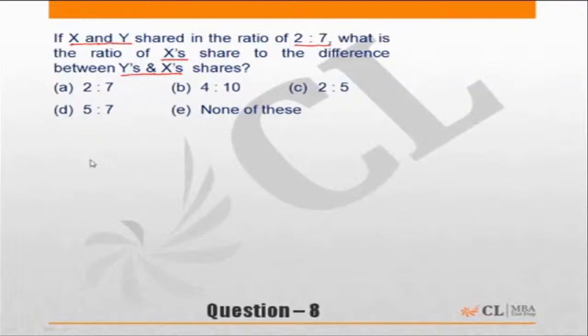Okay, the standard way is to say if X is to Y is 2 is to 7, assume the value of X to be 2a and the value of Y to be 7a.